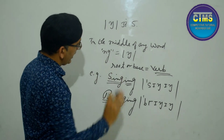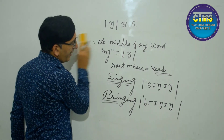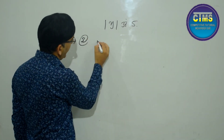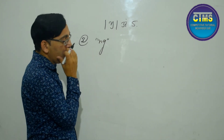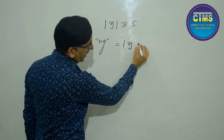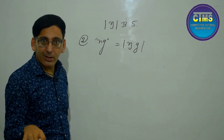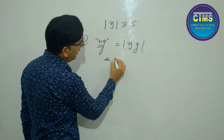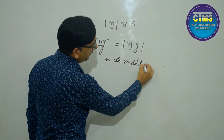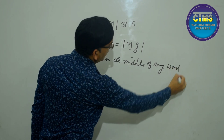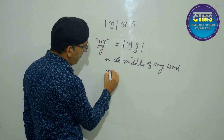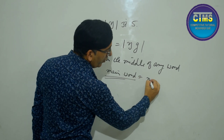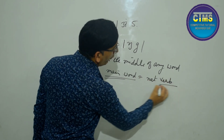Now let's move to the third rule. The third rule: the combination N-G can also produce a ŋg sound — both ŋ and G together. This happens when N-G appears in the middle of any word, but the main root word is NOT a verb.